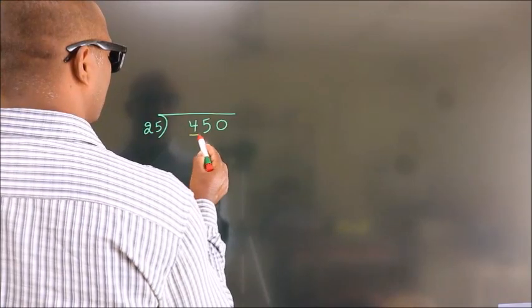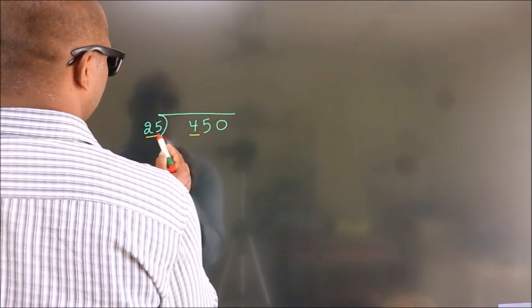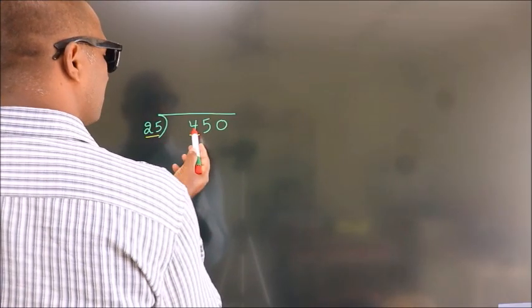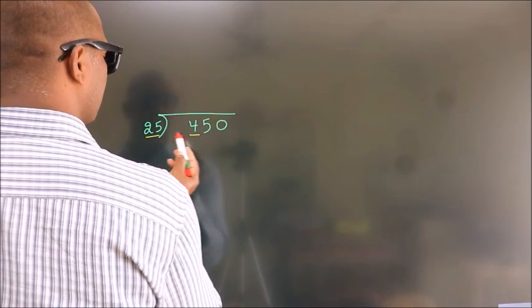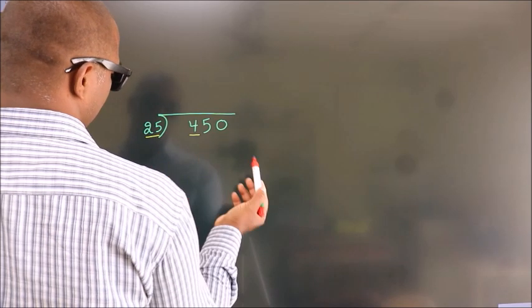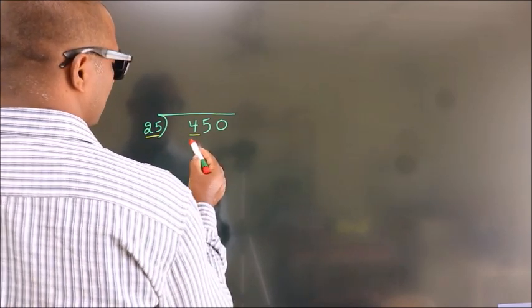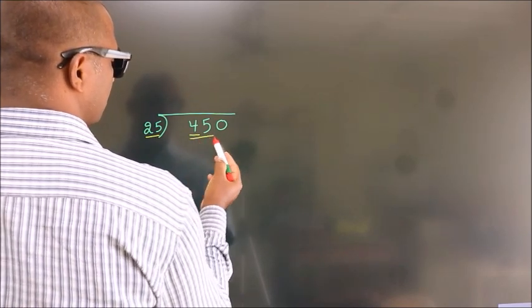Here we have 4. Here 25. 4 is smaller than 25, so we take two numbers.